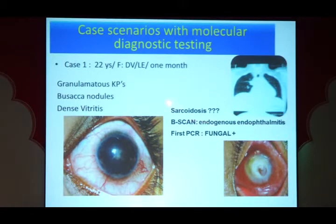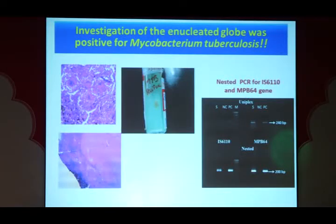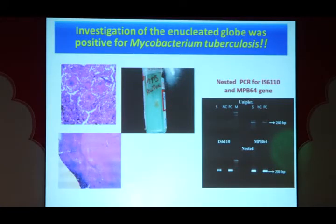A case: a 22-year-old female with one month of defective vision presented to the uveitis clinic. Based on clinical features, the differential was sarcoidosis or endogenous endophthalmitis. AC tap was positive for fungus on PCR, and antifungal treatment was started. Unfortunately, she did not respond, the infection progressed, and a painful blind eye required enucleation. The enucleated eye grew MTB — Mycobacterium tuberculosis — from the specimen and PCR also confirmed TB. This highlights the key issue: the PCR was falsely positive for fungus, as fungus and bacteria being ubiquitous can easily contaminate PCR. PCR is not a gold standard and results must be interpreted with caution.